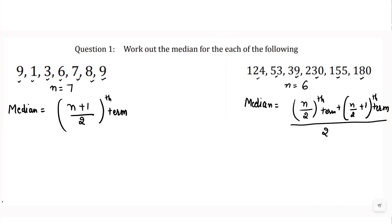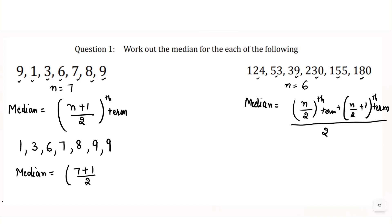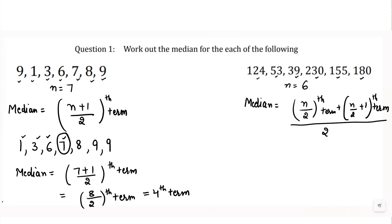First we arrange the values in ascending order: 1, 3, 6, 7, 8, 9, 9. Note there are two 9s, so both are written. Since n equals 7, median equals the (7+1)/2 th term, which is the 8/2 th term, meaning the 4th term. Counting to the 4th term: 1st, 2nd, 3rd, 4th — so the median equals 7.